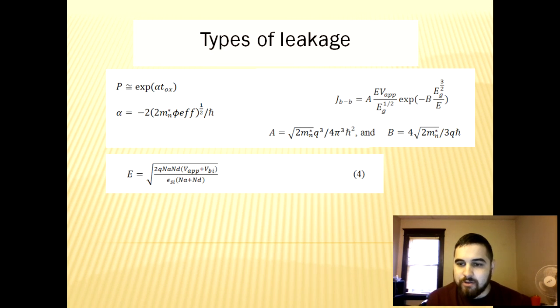Electron tunneling is another one of the major causes of leakage current in modern CMOS devices. There is always a finite non-zero probability for electron tunneling, but this increases exponentially due to the scaling of gate oxide and due to electric fields in the semiconductor. When the electric field across a reversed bias PN junction is greater than 10 to the 6 volts per centimeter, a significant amount of tunneling will occur from the P region valence band to the N region conduction band.